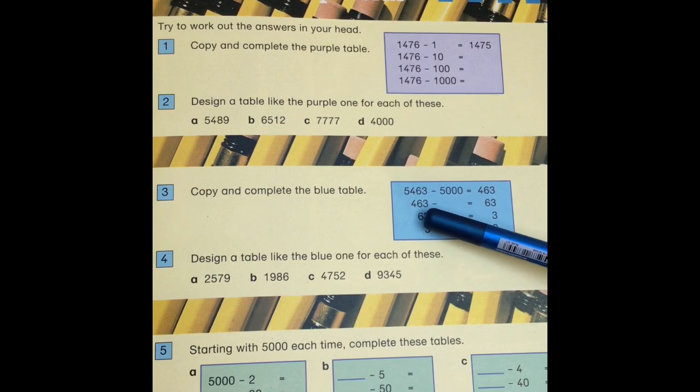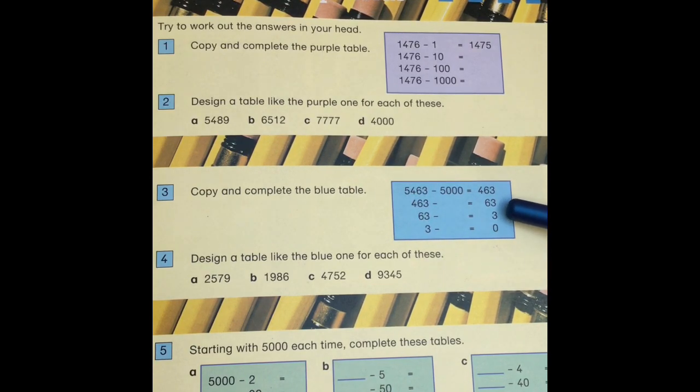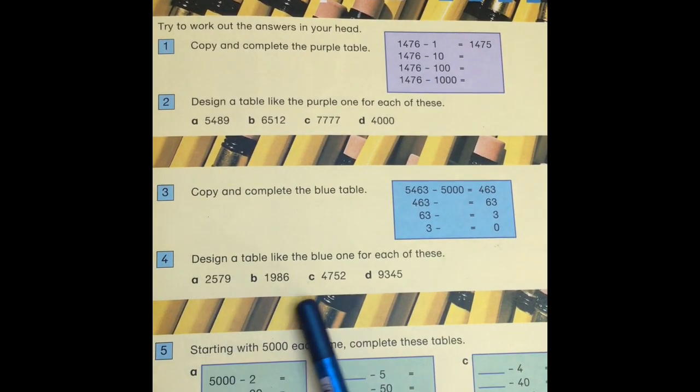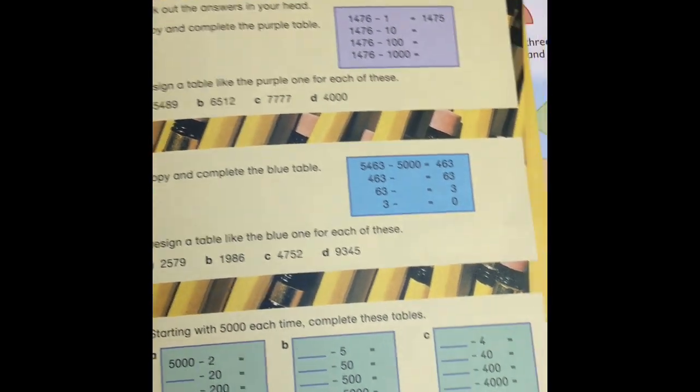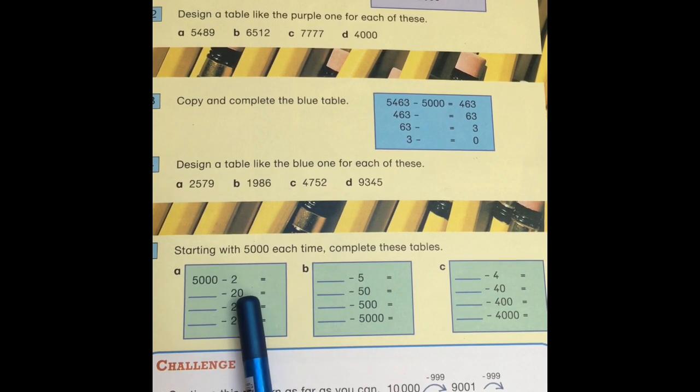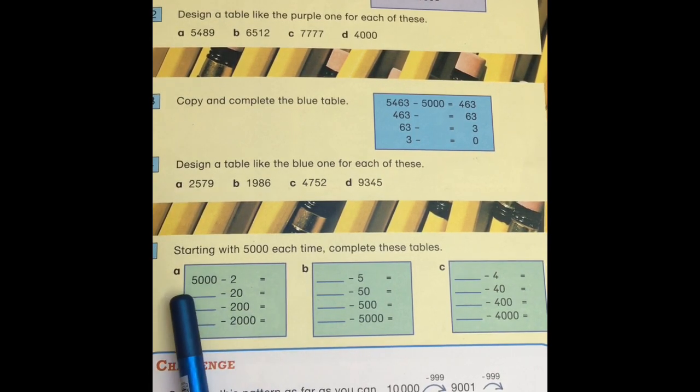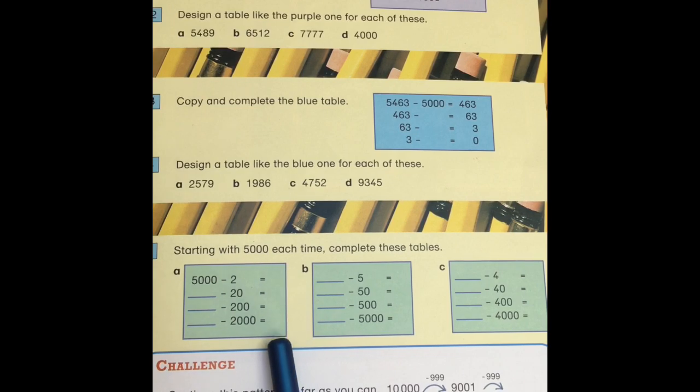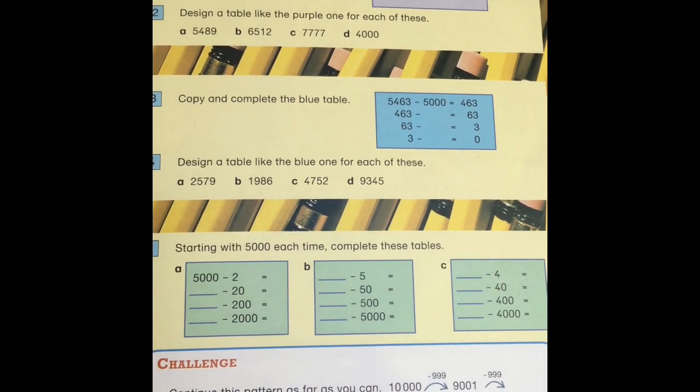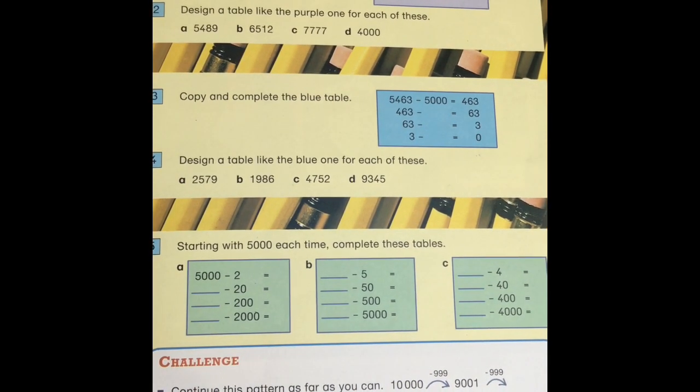Down here, it's very similar except we're going for five thousand also. Take a look. What have we taken away to go from 463 to end up on 63? Have a look at the patterns that are happening in this table. What did we do to get from 63 to get to three, and then from three to zero? Have a look at the patterns and see if you can work out what's going on. Then do the same again for each of these numbers. Finally, your work today: starting with 5000 each time, complete these tables.